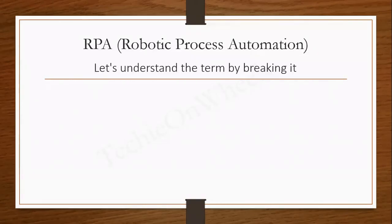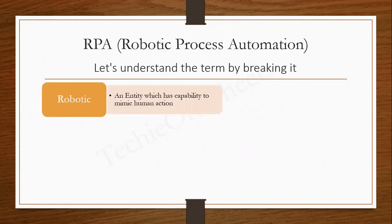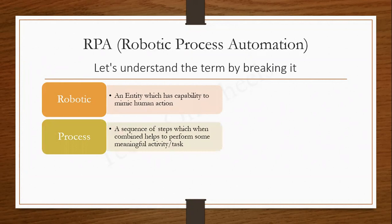Let's understand the term RPA word-by-word. RPA comprises three words: robotic, process, and automation. Robotic means it's an entity which is capable of mimicking human actions, like any robot. Process means there is a sequence of steps you're performing to achieve a specific goal. For example, downloading a report from a website — you log into a website, navigate to a specific page, and download a report. That's the process of report download.